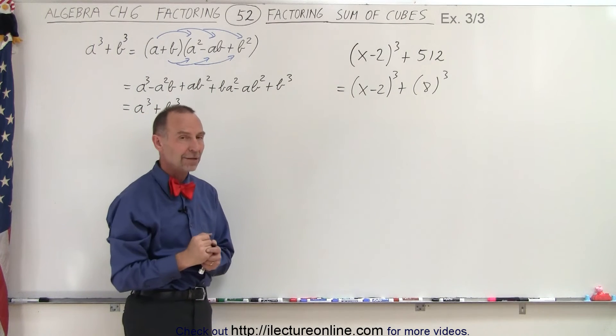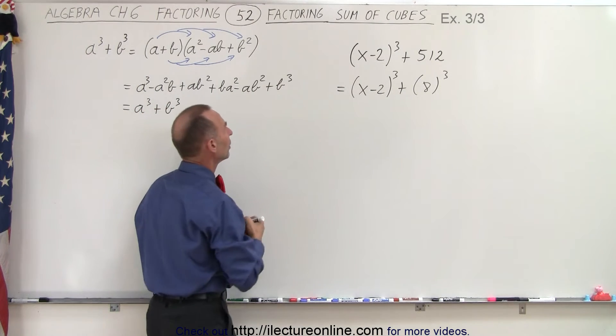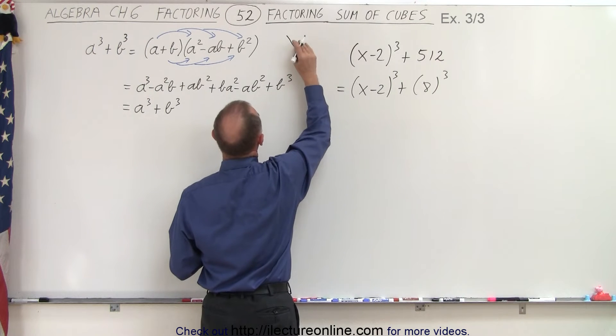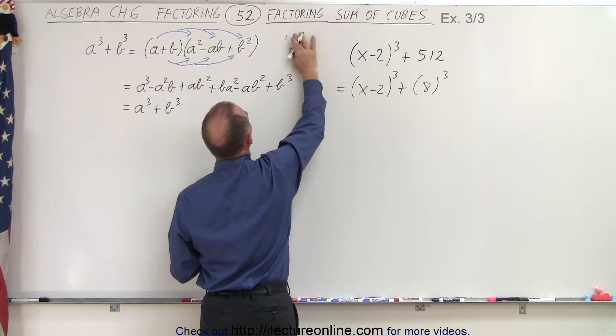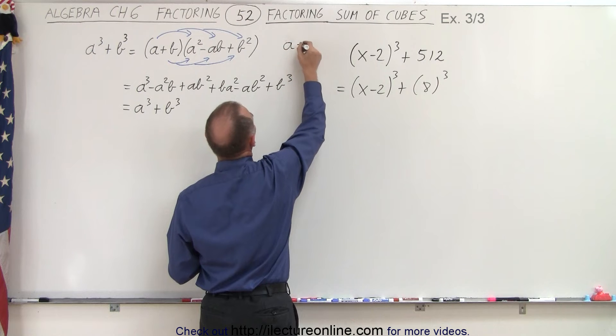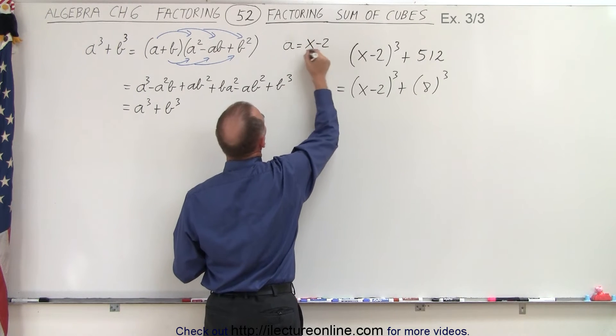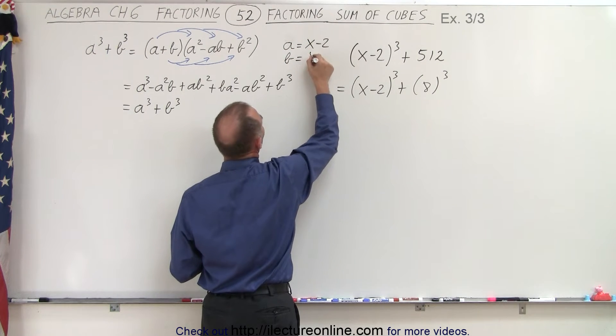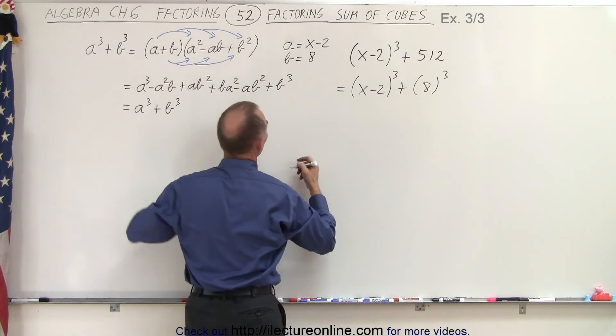So now we're going to apply it to here. And again, it's not a bad idea to say that in this case, a is equal to x-2 and b is equal to 8. And then we're going to apply that to our general form.